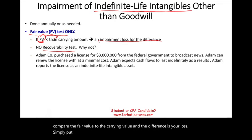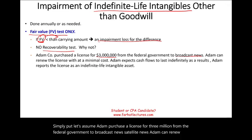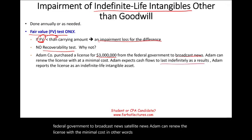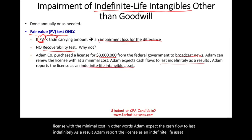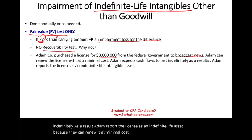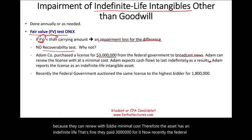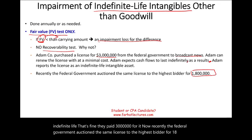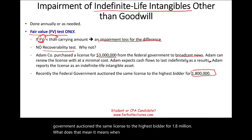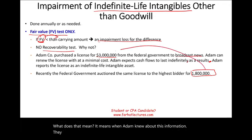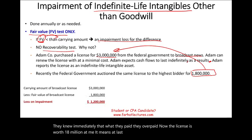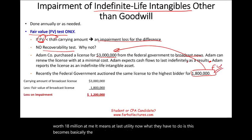Example: Adam purchased a broadcast satellite news license for $3 million from the federal government. Adam can renew the license at minimal cost, so the cash flow is expected to last indefinitely — reported as an indefinite life asset. Recently, the federal government auctioned the same license to the highest bidder for $1.8 million. This means Adam overpaid — the license is now worth only $1.8 million and has lost utility.